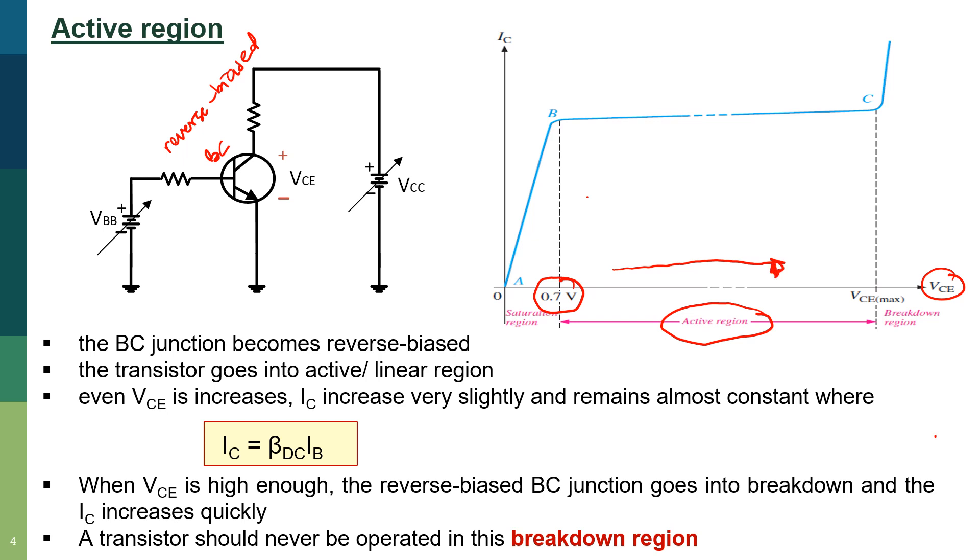IC will increase very slightly and remains almost constant, where the value of IC can be determined using this formula: IC equals DC beta times IB.